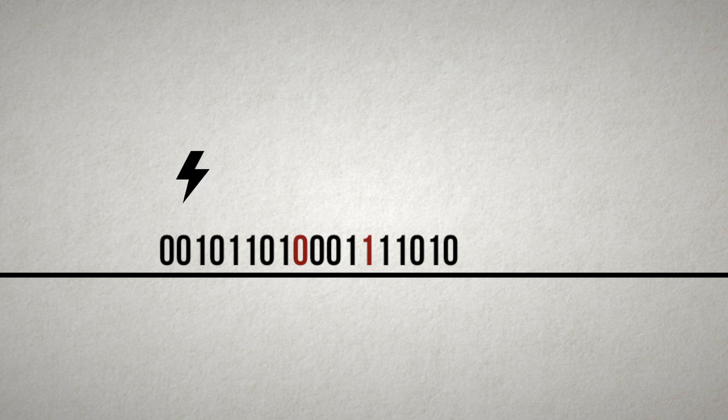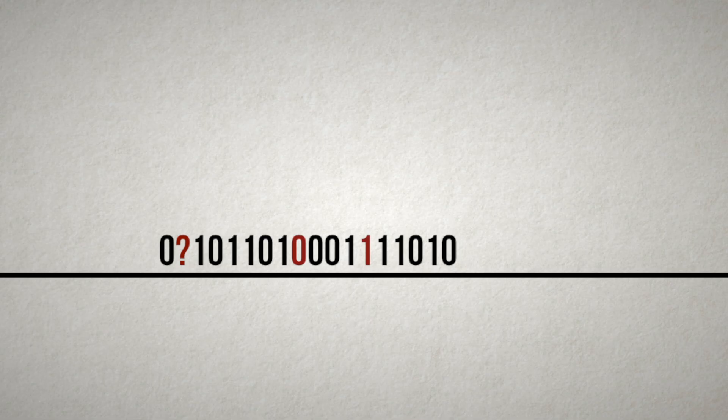Another kind of corruption is an erasure, which occurs when the bits are so distorted that they're considered unknowns or blanks in the message. For this video, we will discuss this problem in terms of erasures, because it simplifies the main ideas.